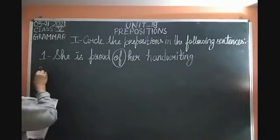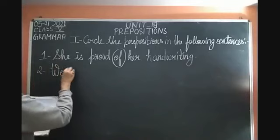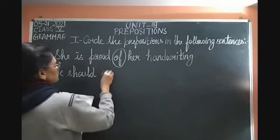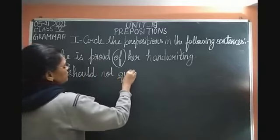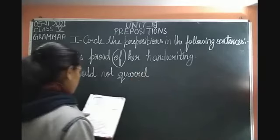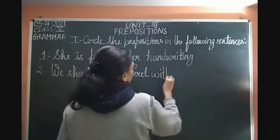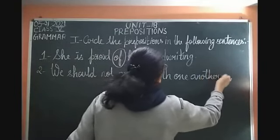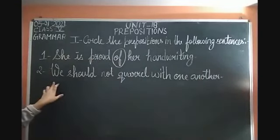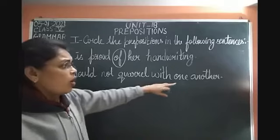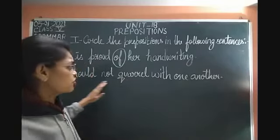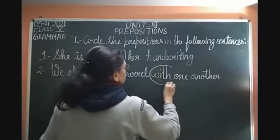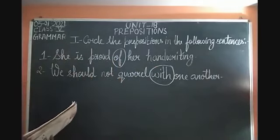The second one: We should not quarrel with one another. 'We' is a pronoun, 'one another' — the word that shows the relationship is 'with.' So the preposition is 'with' — make a circle on 'with.'